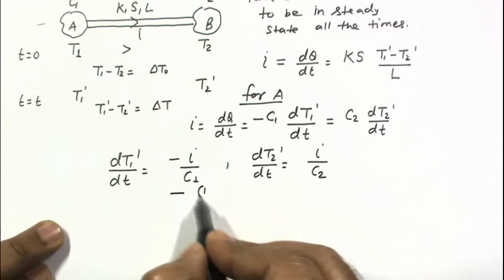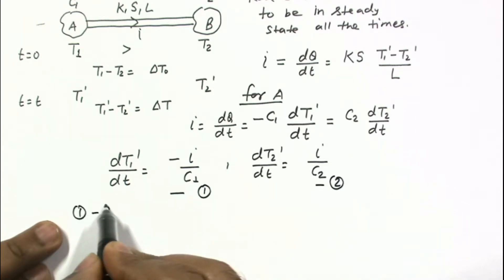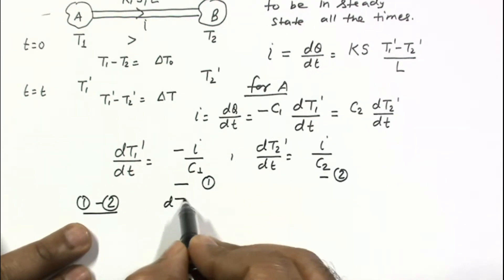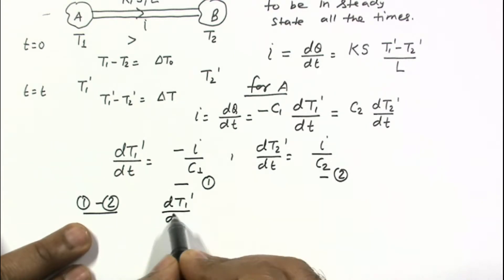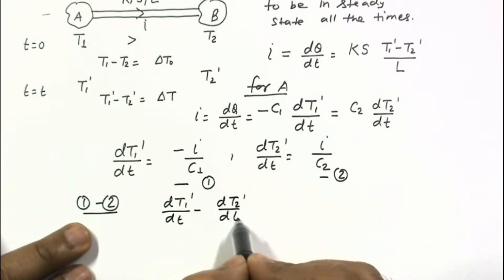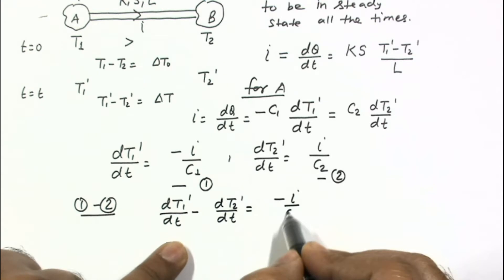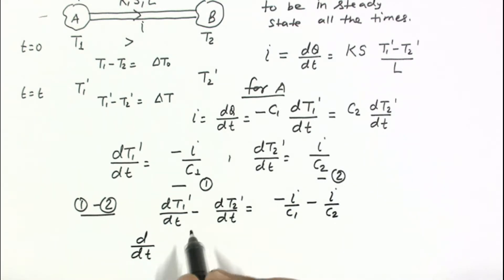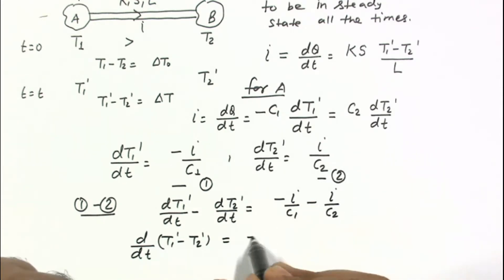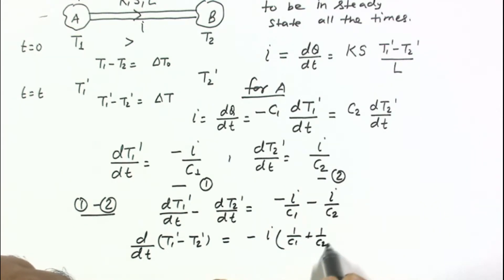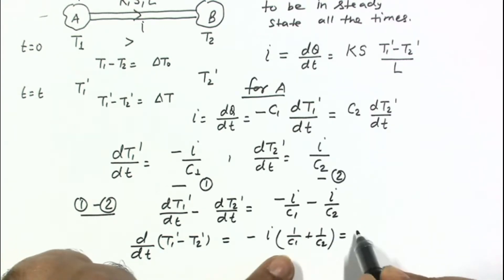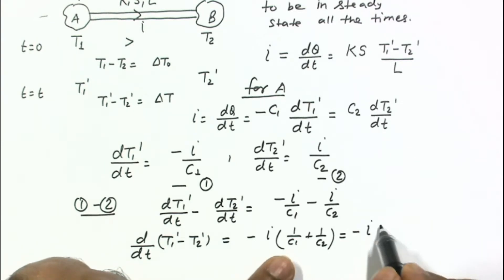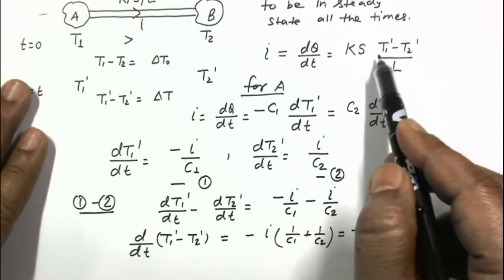Subtracting equation 2 from equation 1, we get dT1 dash by dt minus dT2 dash by dt equals minus I divided by C1 minus I divided by C2. Taking the factor I out, this becomes minus I times lambda, where lambda is defined as 1 over C1 plus 1 over C2.